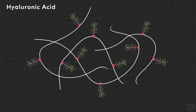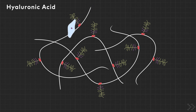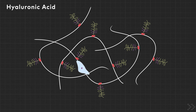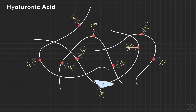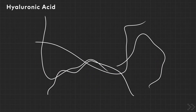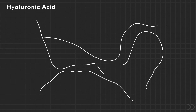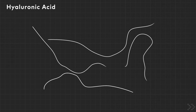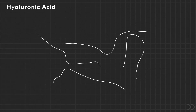Hyaluronin also contributes to the movement and proliferation of cells and participates in a number of cell-surface receptor interactions. Despite its important role in the ECM, hyaluronin alone is highly soluble and often exhibits very poor mechanical properties with rapid degradation behavior in vivo.